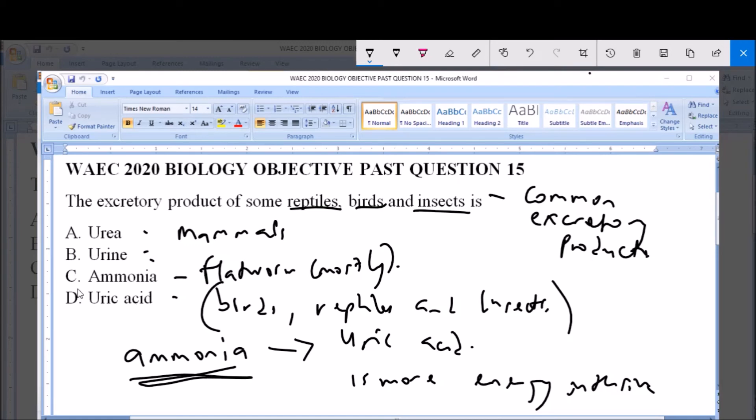That's why reptiles, birds and insects produce uric acid as their waste product. As we have rightly established, option D which is uric acid is the excretory product of some reptiles, birds and insects and is the answer to this question.